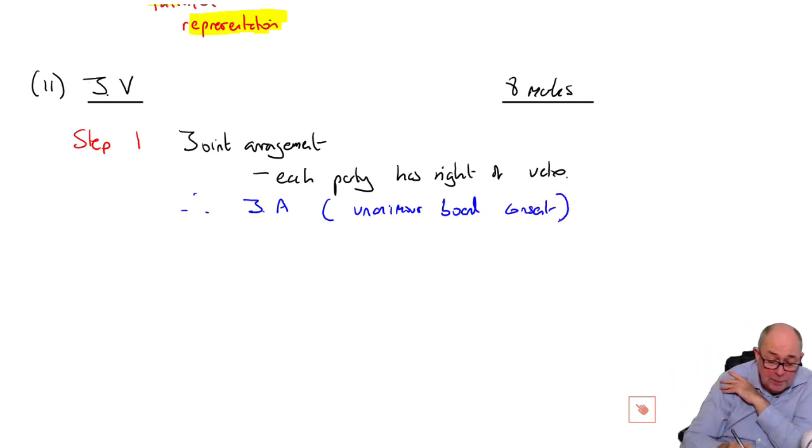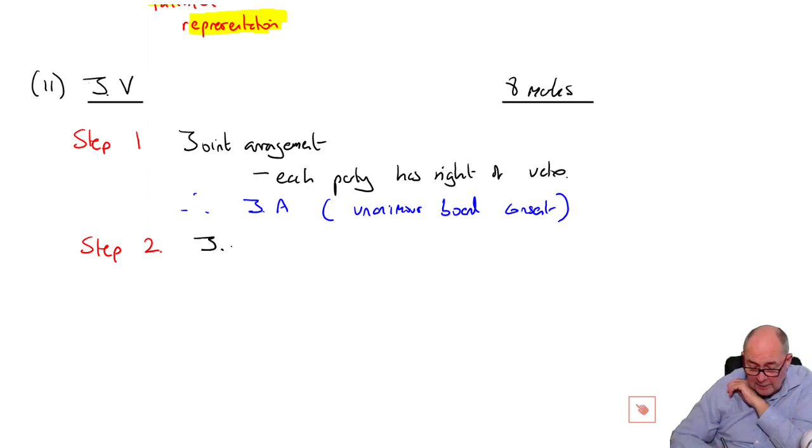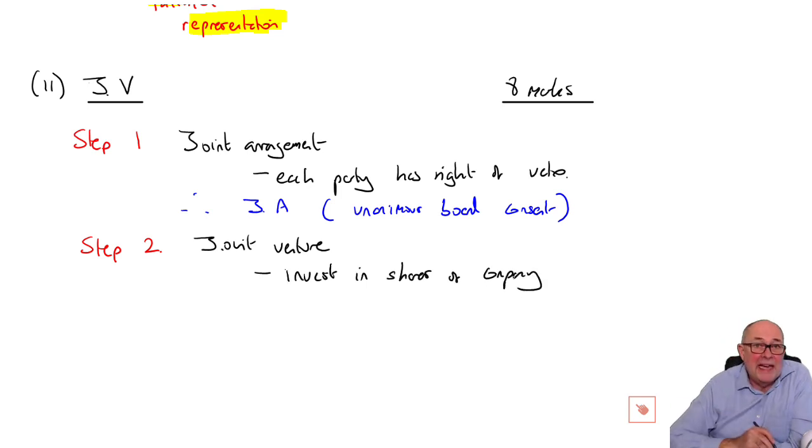And that is, if each party has the right of veto. In the scenario, it seems to say all significant decisions require the unanimous consent of the board. Therefore, we can say, well, this seems to be a joint arrangement. So they have to have unanimous board consent. Step two is then to say, am I investing directly in an asset like a calculator or am I investing in a company? I'm investing in a company. Step two is to say that a joint venture is where you are investing in the shares of a company as opposed to investing in an asset like an oil pipe or something like that. So that's a joint venture.